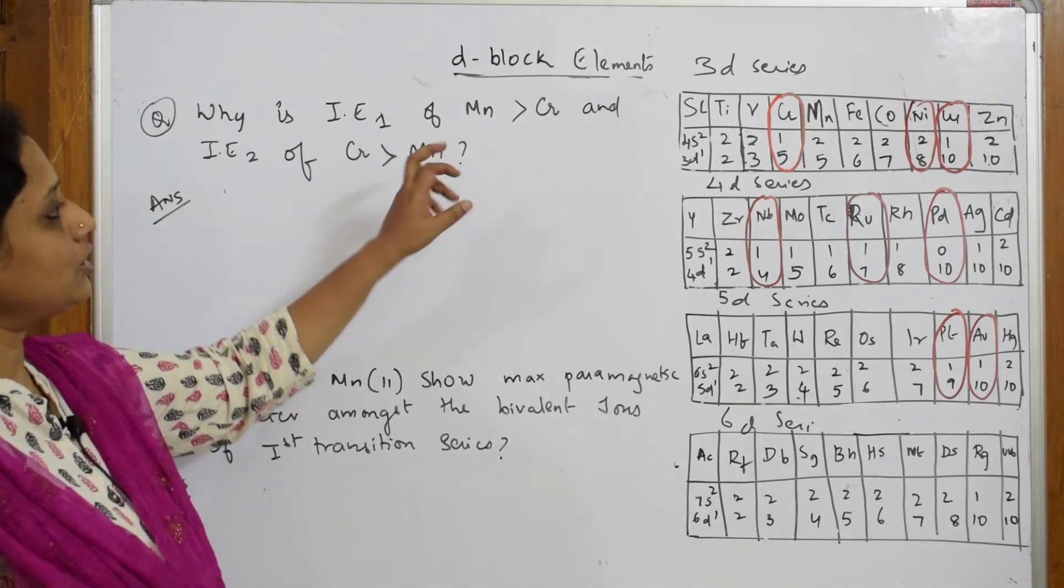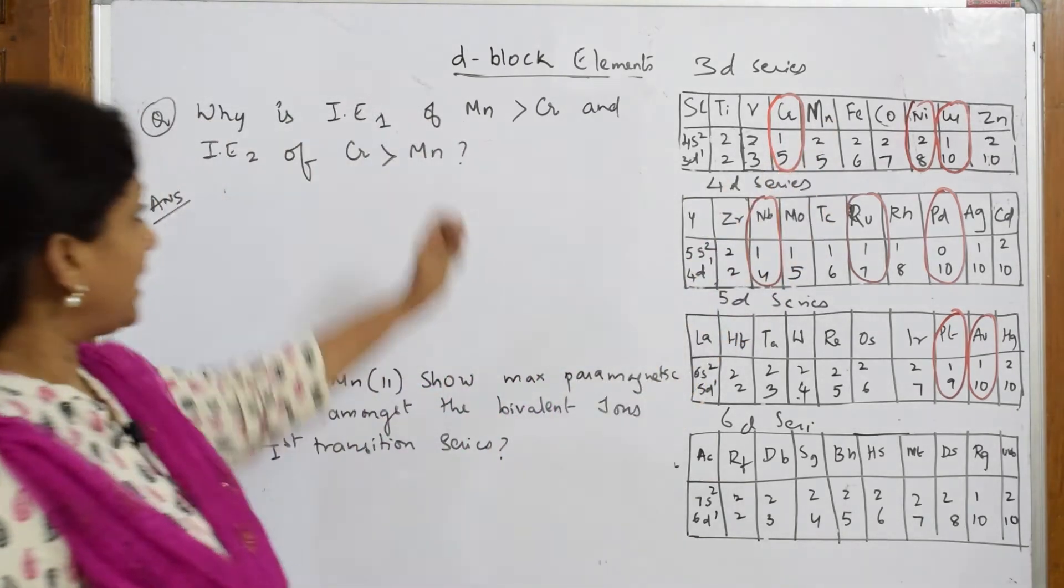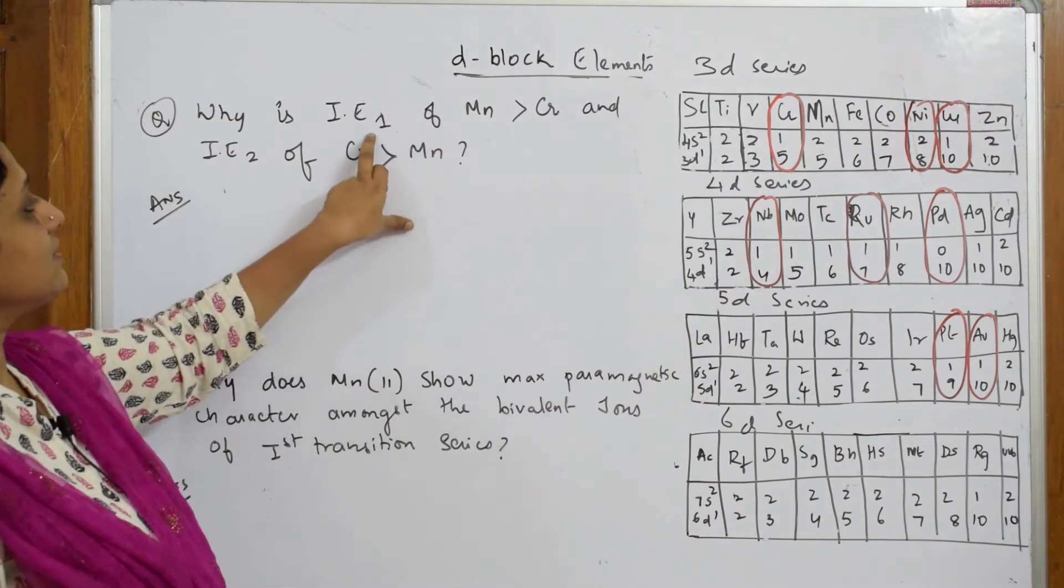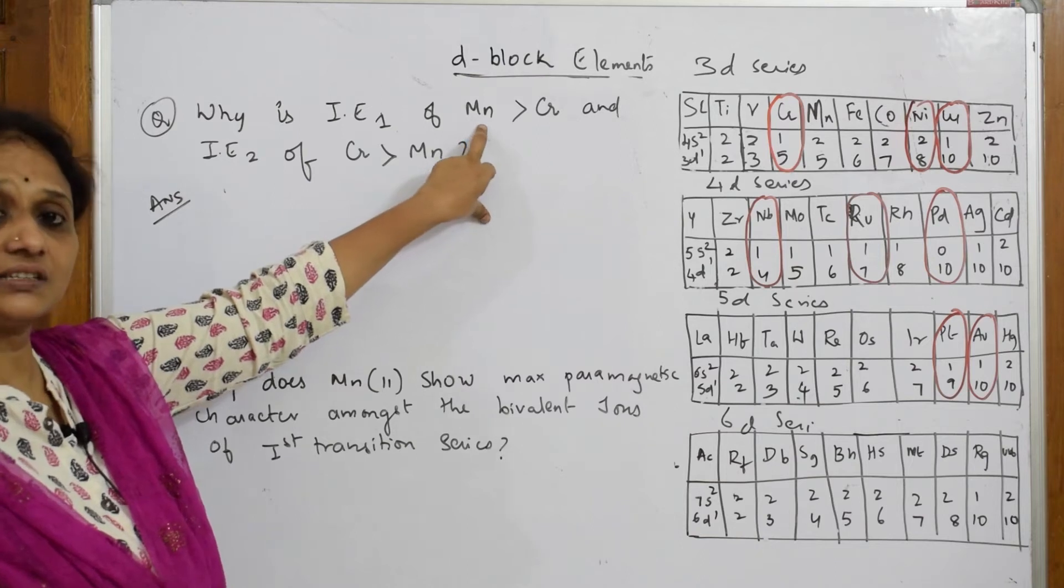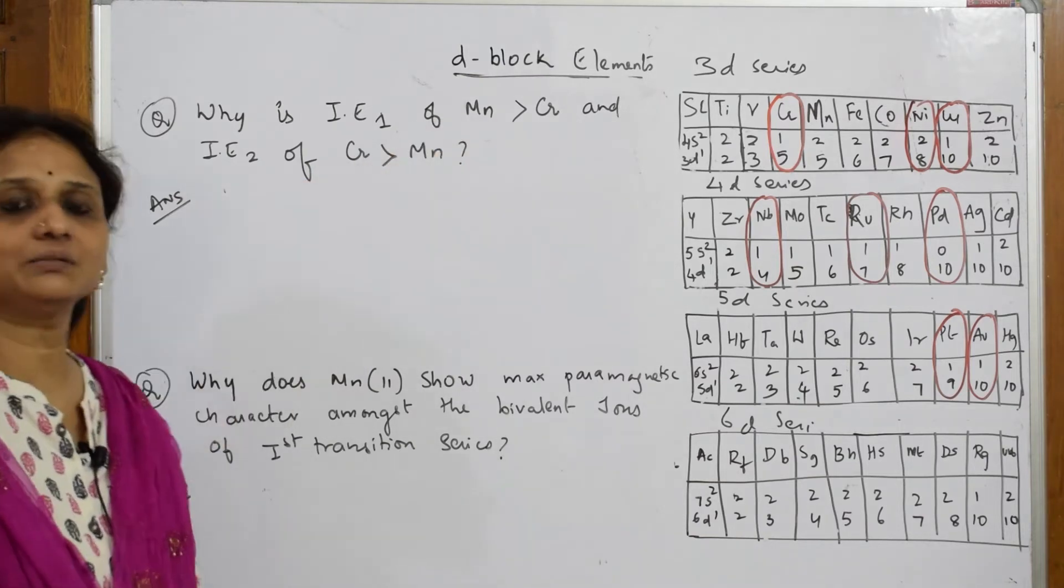Why is IE1 of manganese and chromium different? There is a comparison between these two. IE1 of Mn has greater ionization enthalpy than chromium, and IE2 for chromium is greater than manganese. I have to prove that.